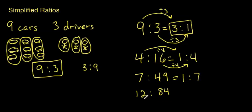Our last one here, 12 to 84. The greatest common factor is 12. So 12 goes into itself once, and into 84 how many times?